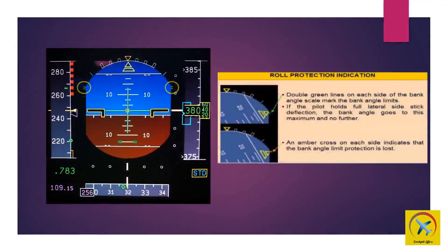Roll protection on the primary flight display shows double green lines on each side of the bank angle scale, marking the bank angle limits. If the pilot holds full lateral side stick deflection, the bank angle goes to this maximum and no further. An amber cross on each side indicates that the bank angle limit protection is lost.